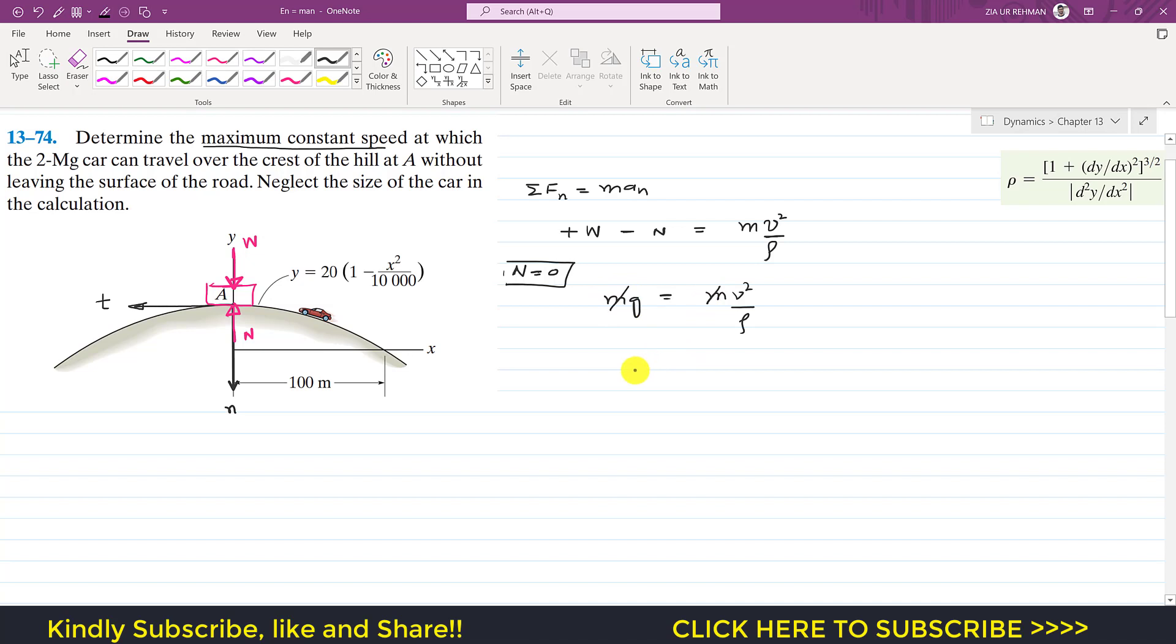Mass will cancel out and we can say that V squared is equal to g into rho, and the velocity, that maximum velocity, is square root of g rho.